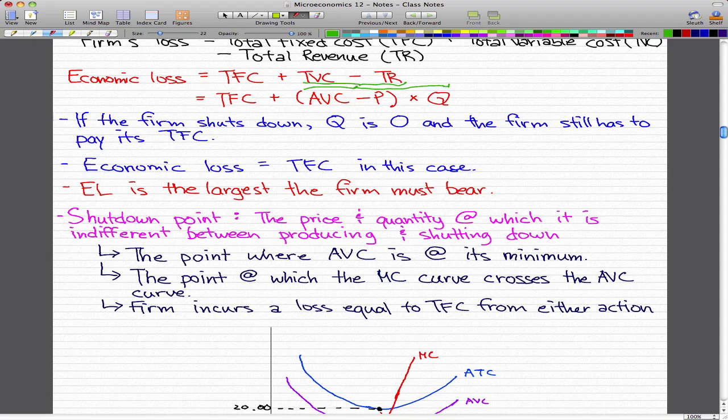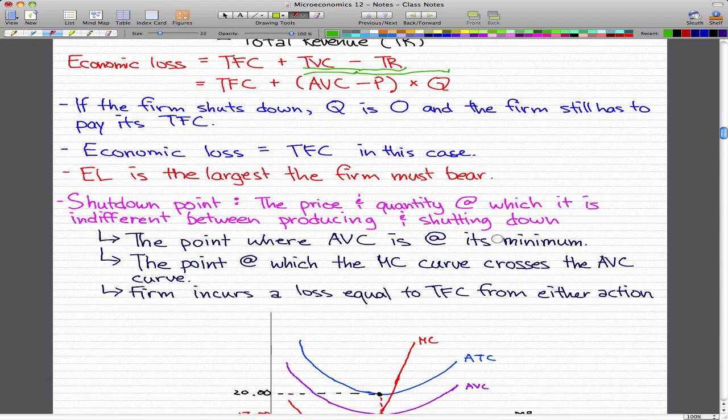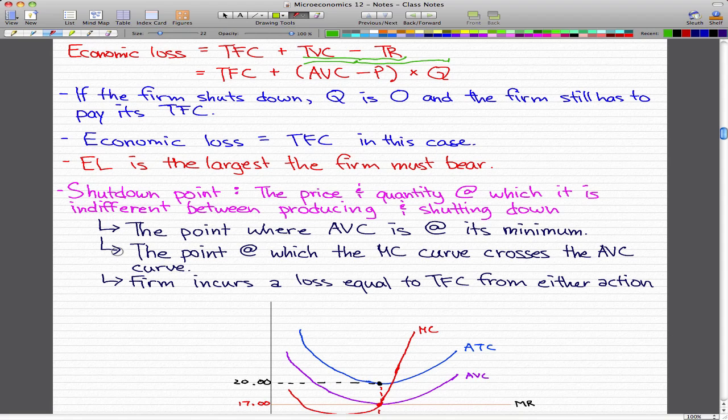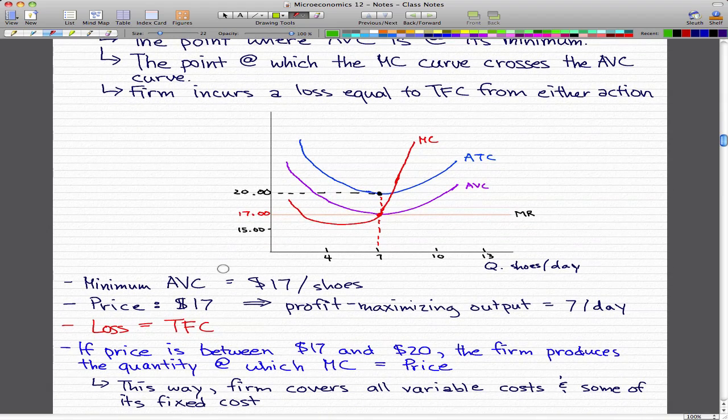Now the shutdown point. A firm's shutdown point is the price and quantity at which it is indifferent between producing and shutting down. It is also the point at which the MC curve, the marginal cost curve, crosses the average variable cost curve. At the shutdown point, the firm is totally indifferent between producing and shutting down temporarily. The firm incurs a cost equal to the total fixed cost from either action. That's a lot of words, so we'll just go through an example to clarify.